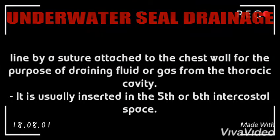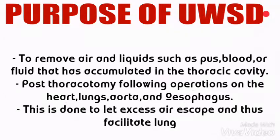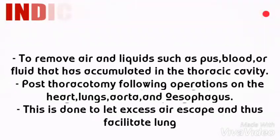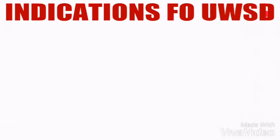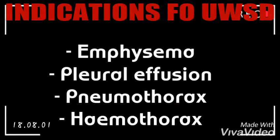It is usually inserted in the fifth or sixth intercostal space. The purpose of underwater seal drainage is to remove air and liquids such as pus, blood, or fluids that have accumulated in the thoracic cavity post-thoracotomy, following operations on the heart, lungs, aorta, and oesophagus. This is done to let excess air escape, thus facilitating lung expansion.